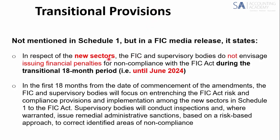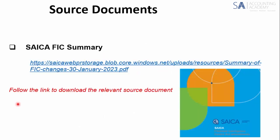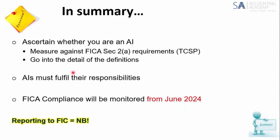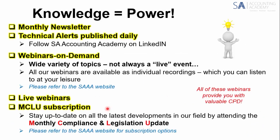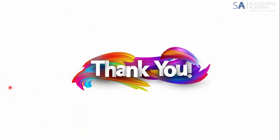Regarding the transitional provisions, new sectors have an 18-month grace period, meaning until June 2024 to comply. The supervisory bodies will conduct inspections, though the supervisory bodies are not yet finalised for most of the new sectors. Source documents are available via the links provided for download. In summary: make sure you establish whether you are an AI — are you a TCSP? Measure yourself against the definitions. If you are an AI, you must fulfil all your responsibilities, and your FIC compliance will be monitored from next year. Thank you very much — enjoy the rest of your day.